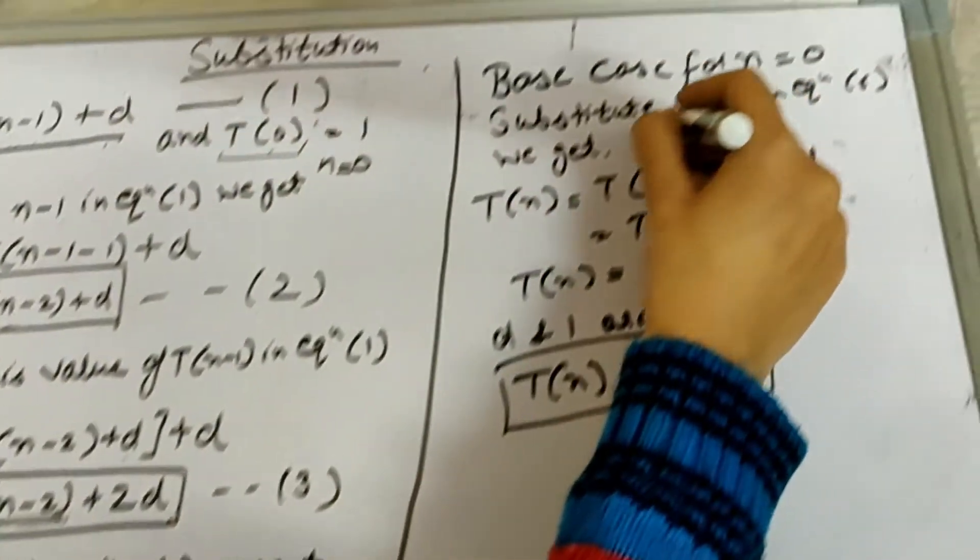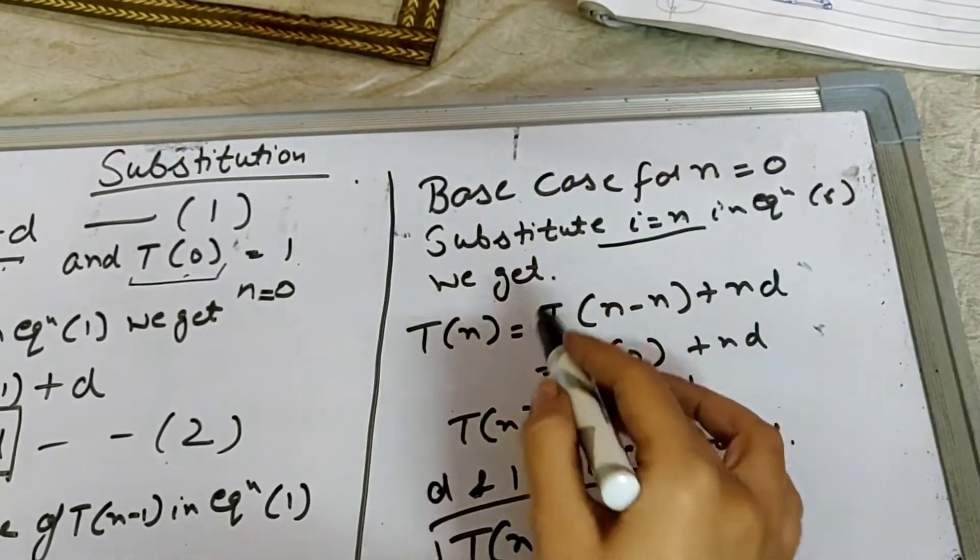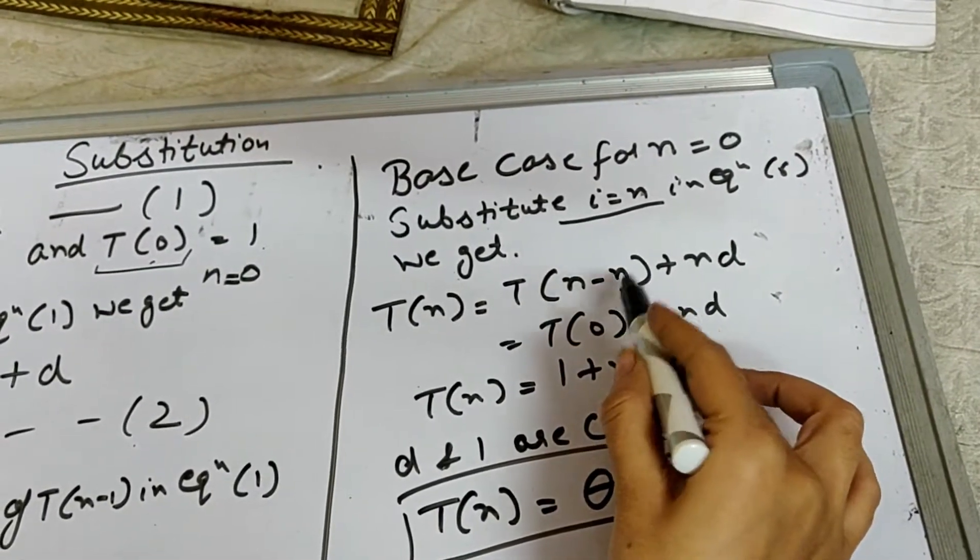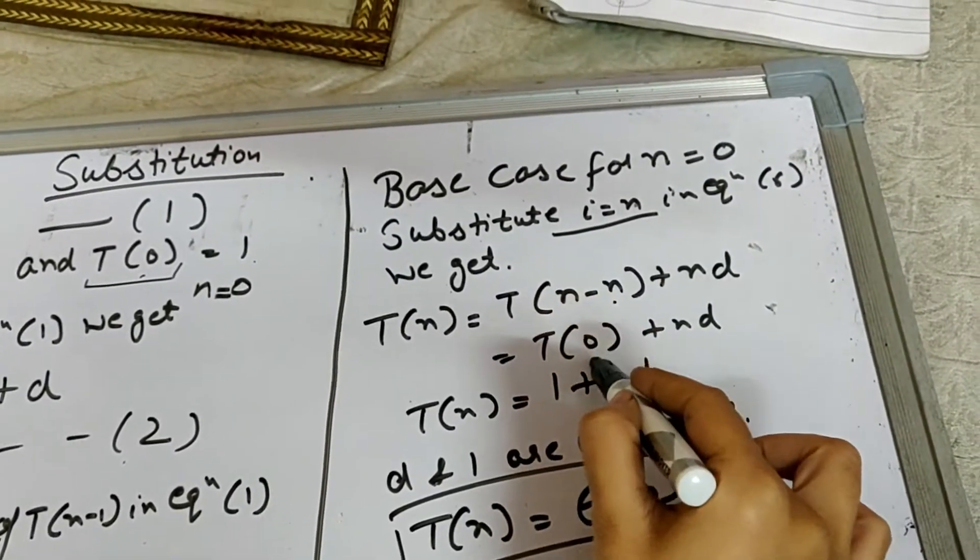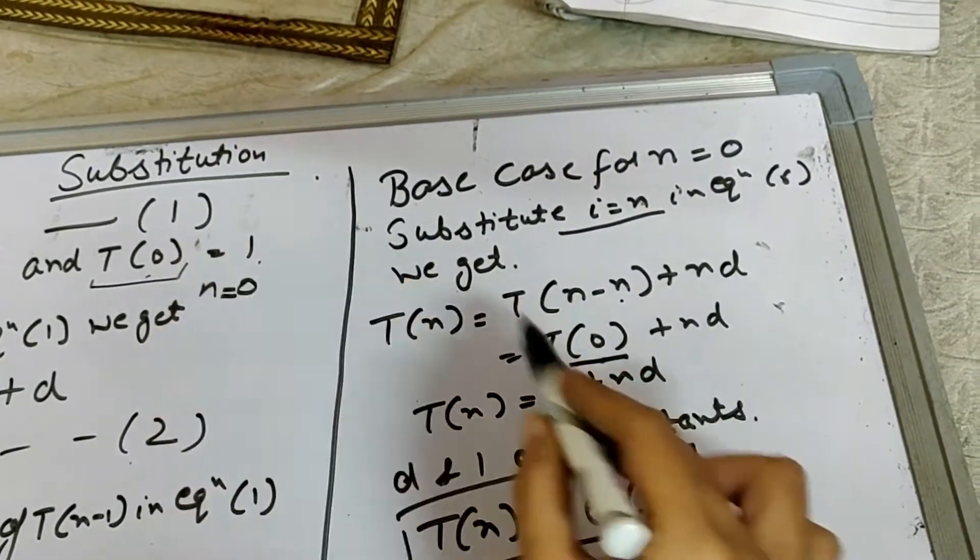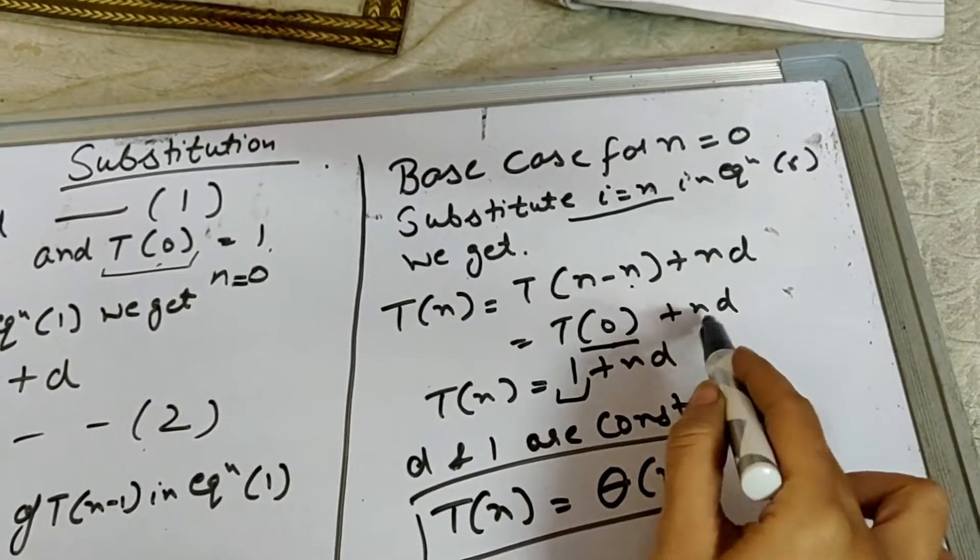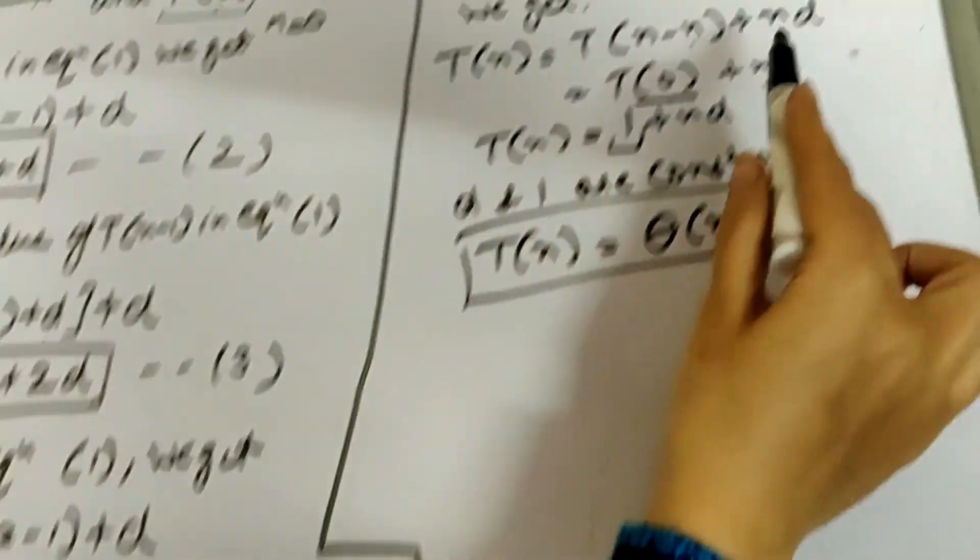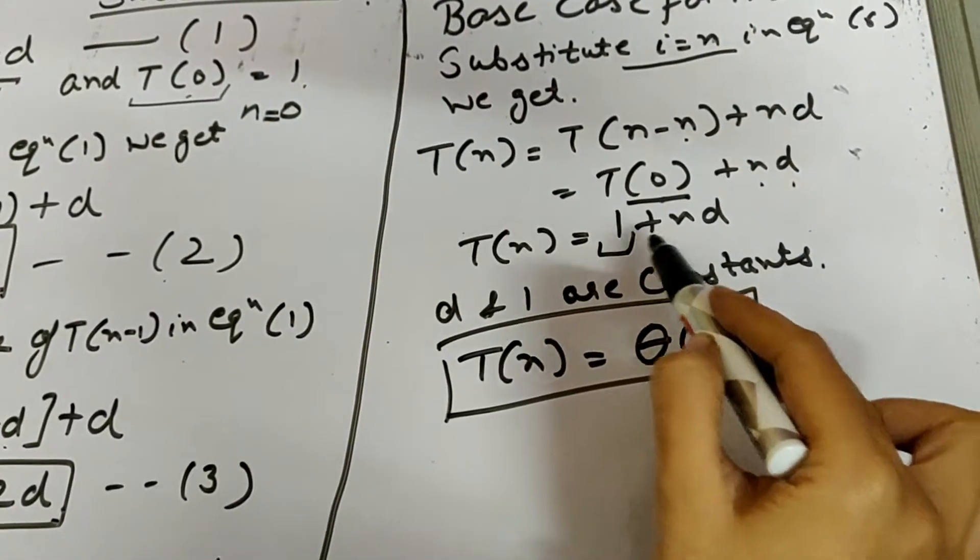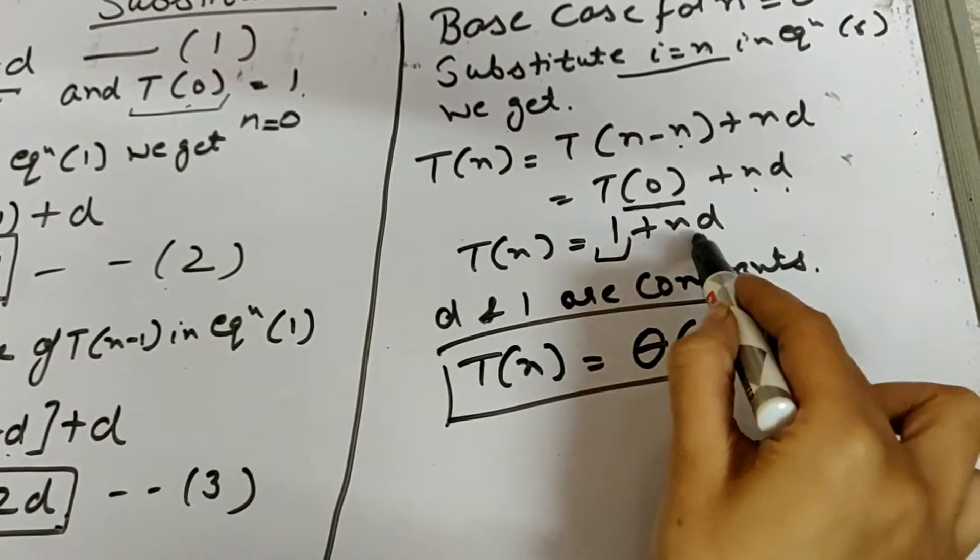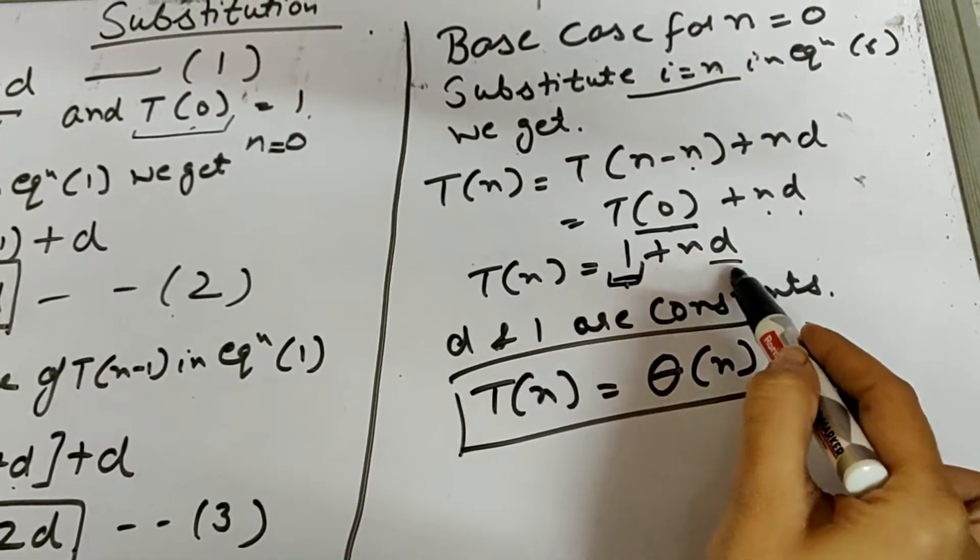So here i is equal to n. In equation 6 we get T(n) is equal to n minus n, because i equals n. So n minus n equals T(0), which is equal to 1, the base case. So you substitute it plus n and d, both are the terms which have been occurring from this relation only, because i equals n. So here we have nd. Now what is finally here? 1 plus n into d.